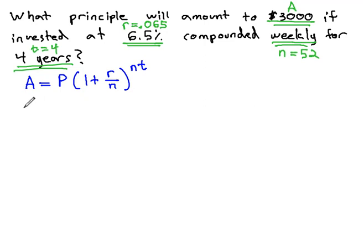So let's plug in what we have. A, we said was 3,000 equals P, we never found, times 1 plus R, which is .065 over N, which we found out was 52, to the NT, 52 times T, which is 4.